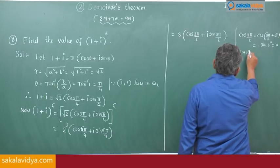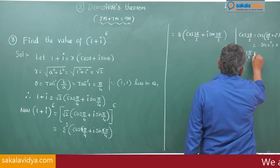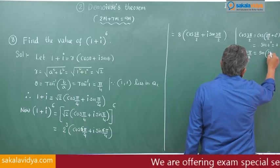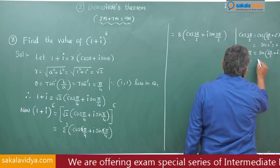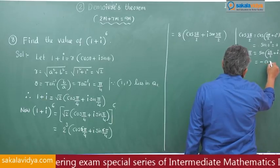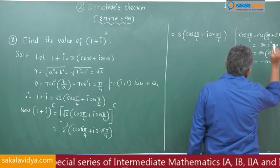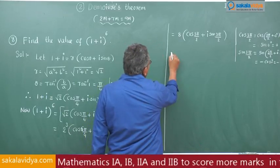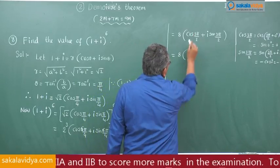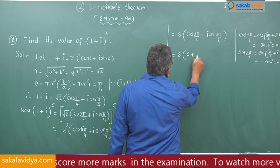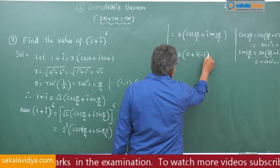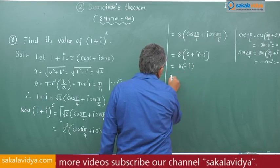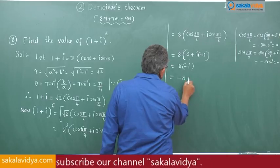For sin(3π/2): sin(3π/2 + 0°) = −cos(0°) = −1. So the expression becomes 8(0 + i(−1)) = 8(−i) = −8i.